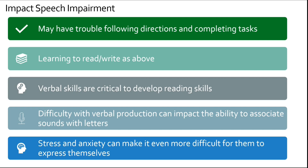The impact of speech impairment is that they may have trouble following directions or completing tasks, and difficulty learning to read and write. Verbal skills are critical to developing reading skills. They have difficulty with verbal production, which can impact their ability to associate sounds with letters. Their stress and anxiety can make it even more difficult for them to express themselves.